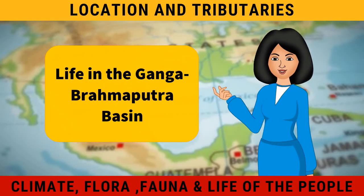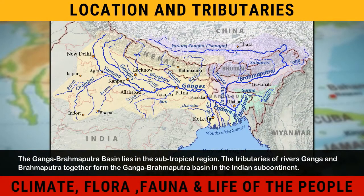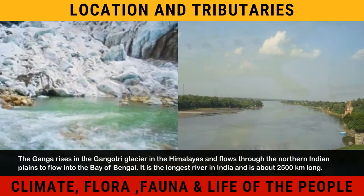Life in the Ganga Brahmaputra Basin. The Ganga Brahmaputra Basin lies in the subtropical region. The tributaries of rivers Ganga and Brahmaputra together form the Ganga Brahmaputra Basin in the Indian subcontinent. The Ganga rises in the Gangotri Glacier in the Himalayas and flows through the northern Indian plains to flow into the Bay of Bengal. It is the longest river in India and is about 2,500 km long.